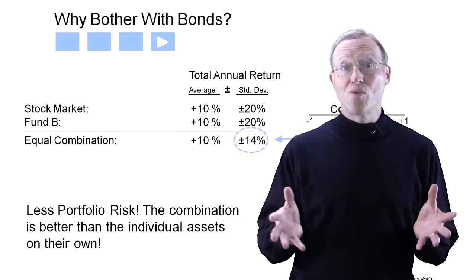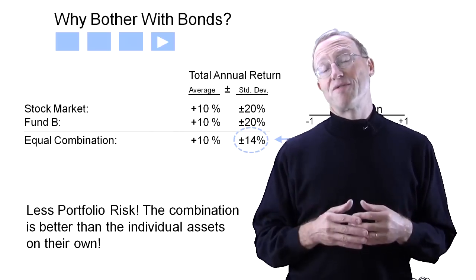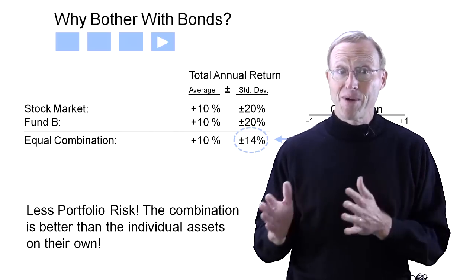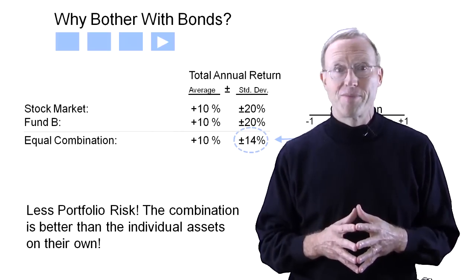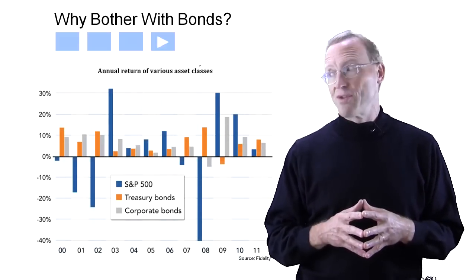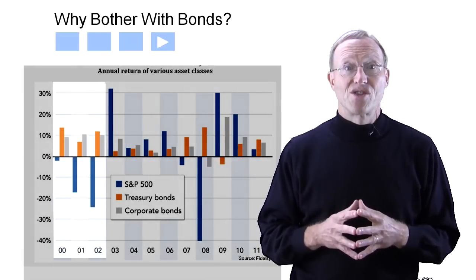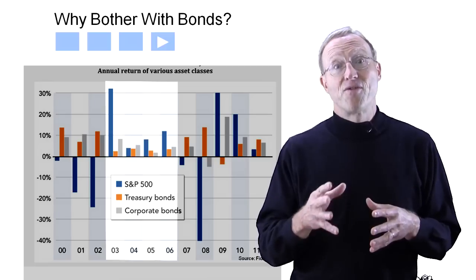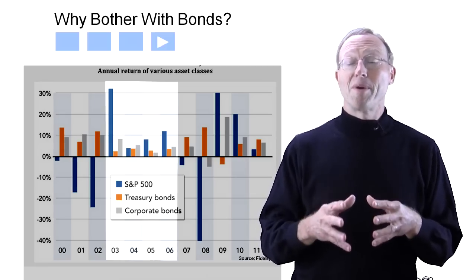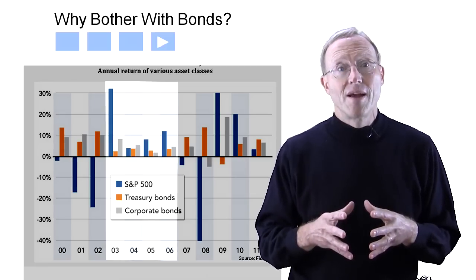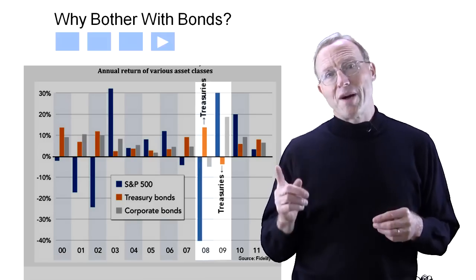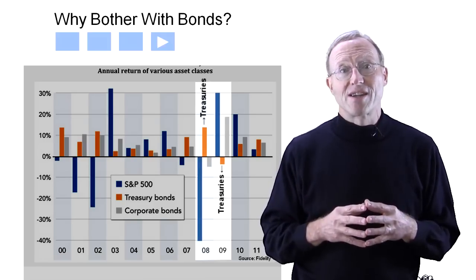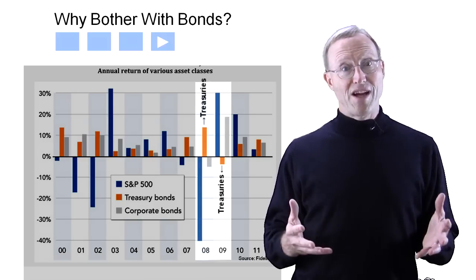The longer answer includes a warning that the correlation of two assets depends on the time period that they are compared. Let's look at some actual returns. These three years, stocks went down but bond returns went up. These four years, stocks went up and bonds went up also. And for these years, corporate bonds moved in the same direction as stocks but treasury bonds moved in the opposite.